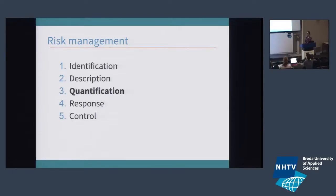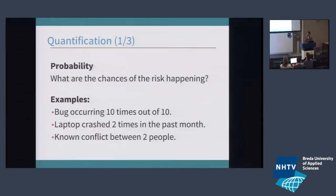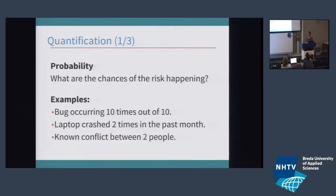After describing the risk, you want to give it some kind of quantification so you can compare risks with others. There are three parts to quantifying a risk. One is the probability of it happening. Godzilla might run over your studio — it might be a risk — but the probability is so low that it's not really interesting to manage. But if you have critical bugs or performance problems and you find out that 8 out of 10 people have them, that makes the priority higher.